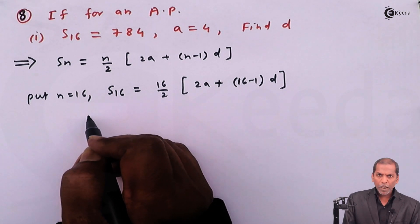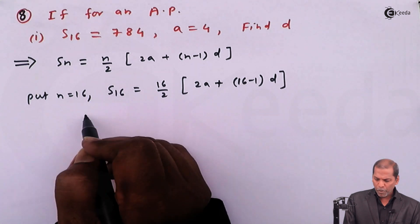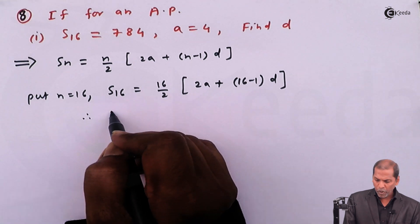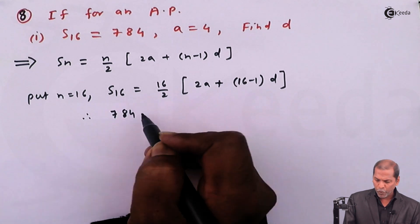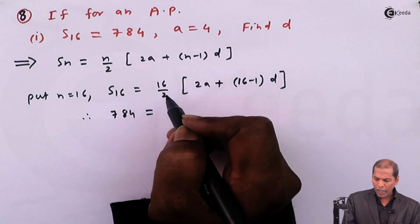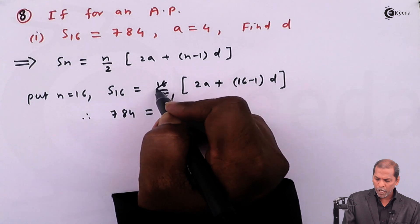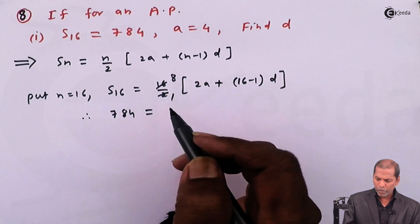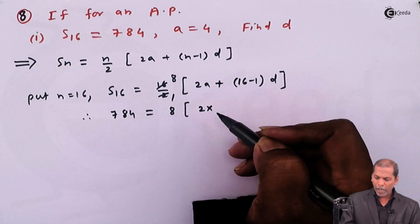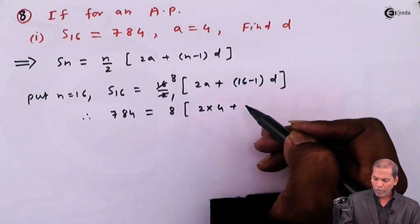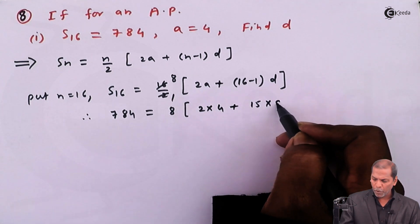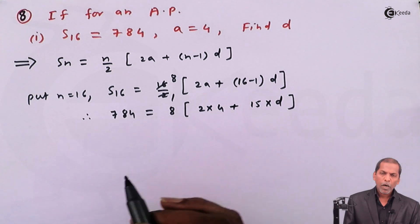Now we replace the corresponding values. So the next step will be 784 is equal to, here we do the cancellation, 2 1s are 2, 8s are 16, so 8 in bracket 2 multiply by 4 plus 16 minus 1 gives 15 into d, and finally the square bracket close.